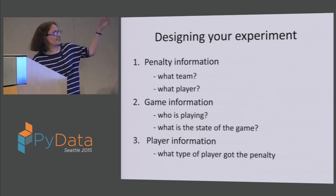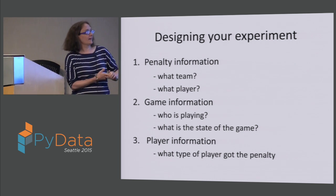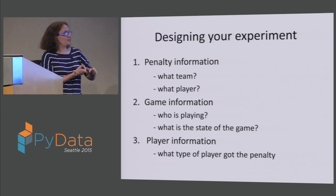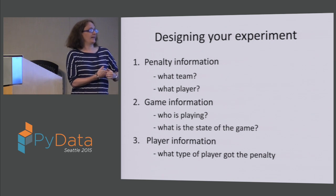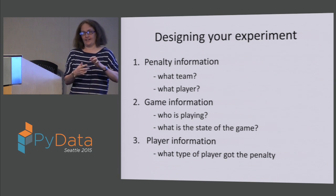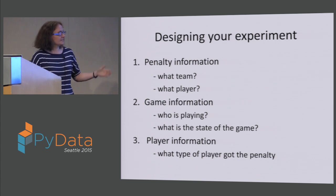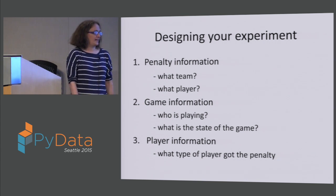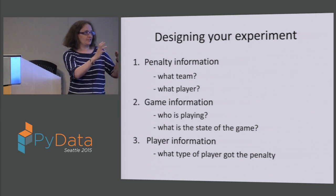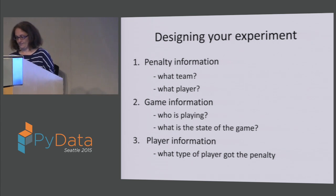There were specific types of data I was interested in for penalties: which team, what player, what type of penalty. For game information: who's playing, what's the state of the game when the penalty happens — is the team taking the penalty down, ahead, or tied? And a little bit about player information — what type of player got the penalty. There's quite a range between a real skilled guy valued on the ice versus the enforcer who just likes to get in fights.